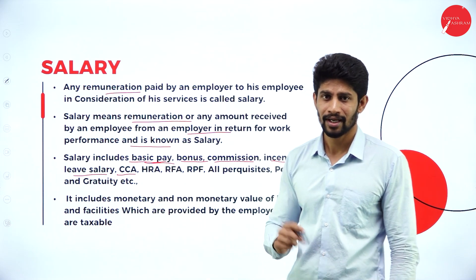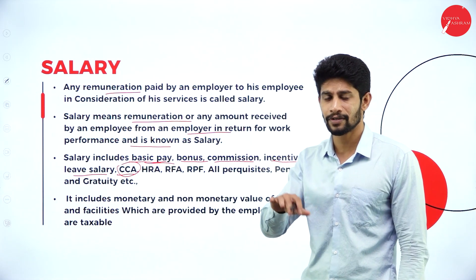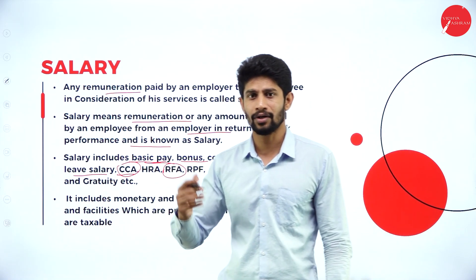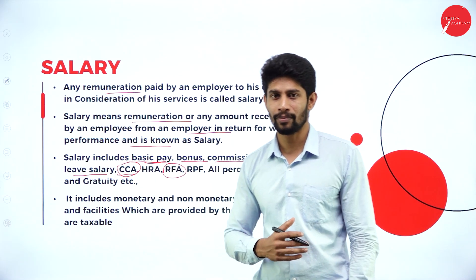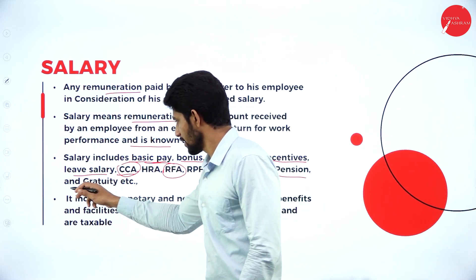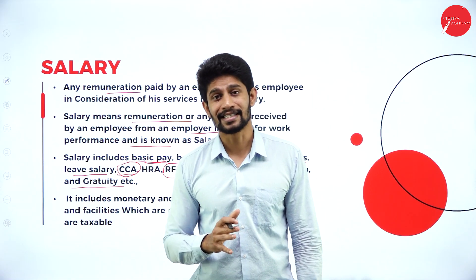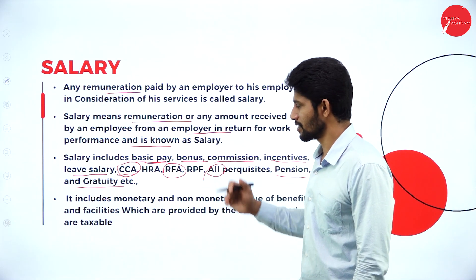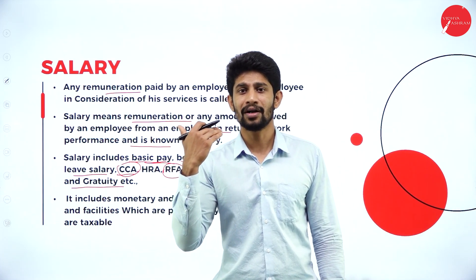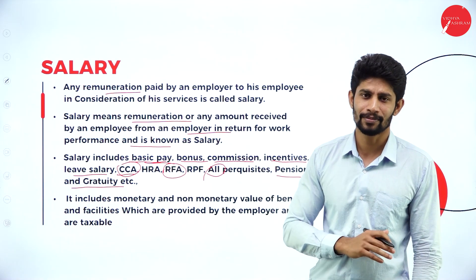CCA — city compensatory allowances: if your employer gives city compensatory allowances, that is also considered as your salary. HRA — house rent allowances: if your employer gives you house rent allowances, that is also called salary. RFA — rent-free accommodation: if your company has free quarters facility, you pay some amount for that, which is also considered as salary. All perquisites, pensions, and gratuity are called salary. Whatever the amount you receive from your employer — whether house rent allowances, city compensatory allowances, uniform allowances, traveling allowances, telephone bill paid by your employer, bonus, commission, incentives, or basic salary — the sum of money received from the employer is called salary for computation of income from salary.